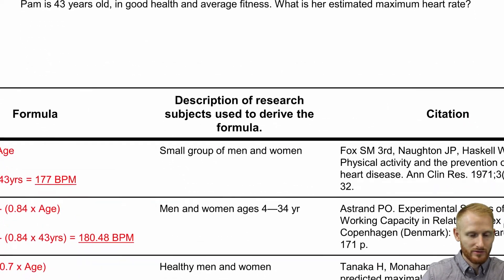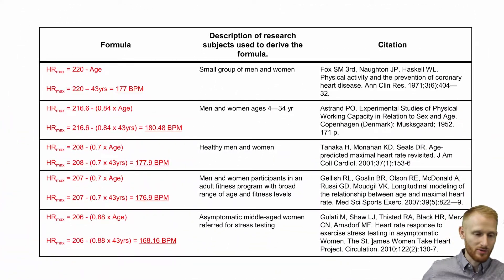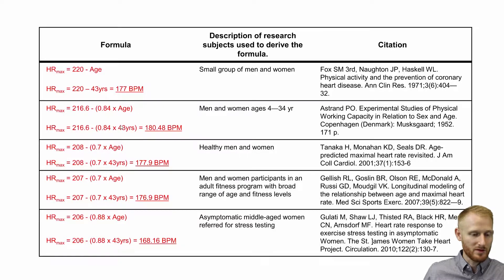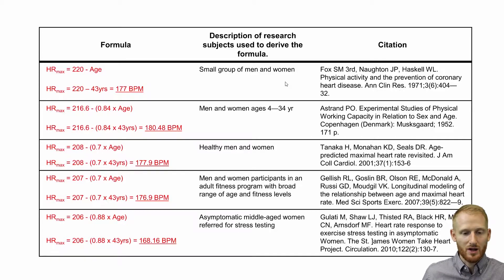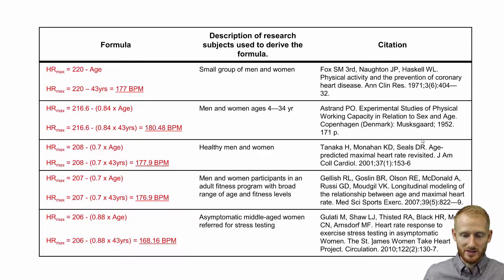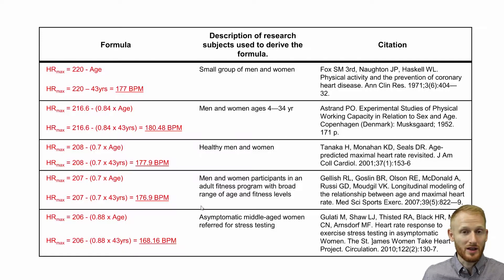We have this table here that goes over some of the most common maximal heart rate calculations. The top row in each entry is the equation and the bottom is when I plug in her information and solve for it. Each of these equations was created from a research study based on a certain population. You can see a description of that population in the middle column — go ahead and pause the video and take a look. Here are the citations that go with each of these five different equations for estimating maximal heart rate.